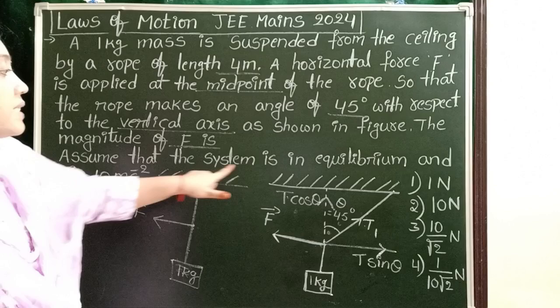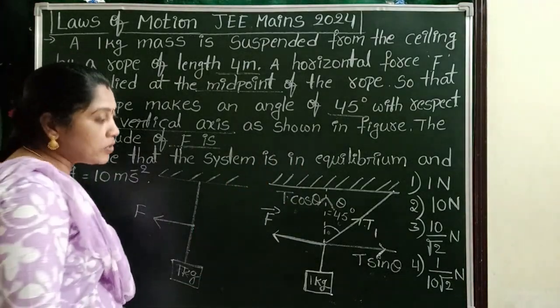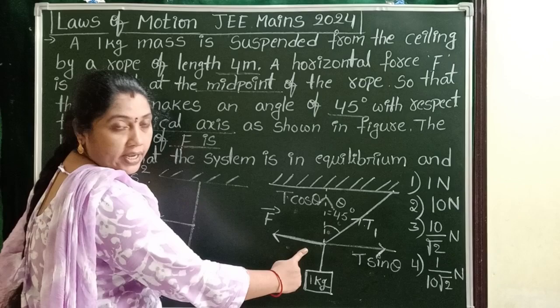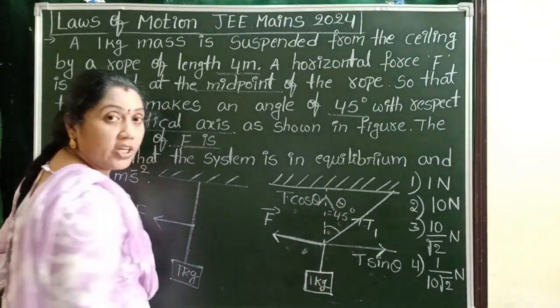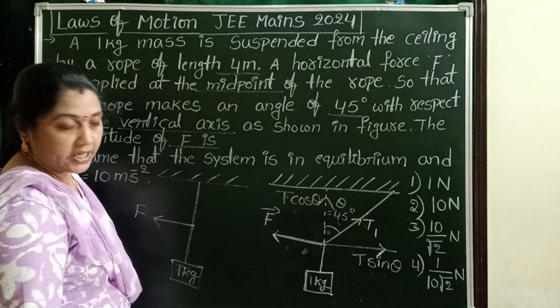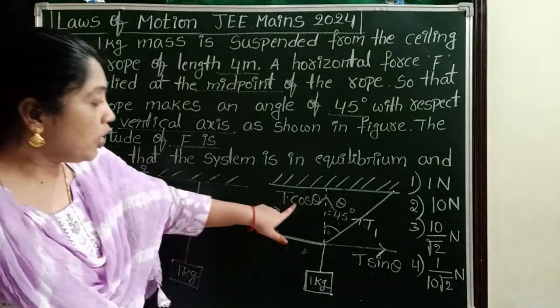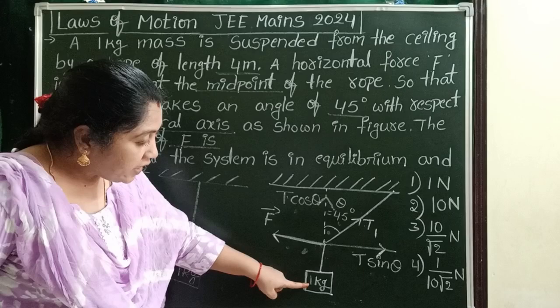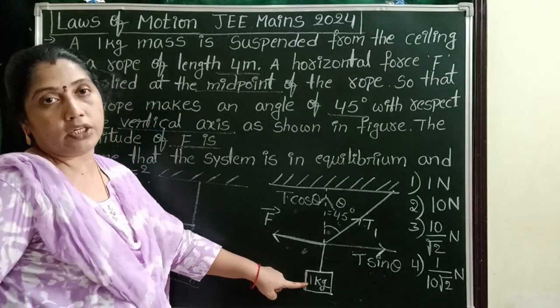Assume that the system is in equilibrium position. So the resultant force along the x direction and y direction is zero. There is no resultant. The system is in equilibrium position. So T cos theta acting in upward direction and the weight of this block is acting in downward direction.